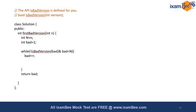Here you can see the isBadVersion API is already defined for you, so you do not have to write it — you have to utilize isBadVersion. You also have to minimize the number of calls made to isBadVersion in order to reduce the time complexity. So let's begin with the solution.